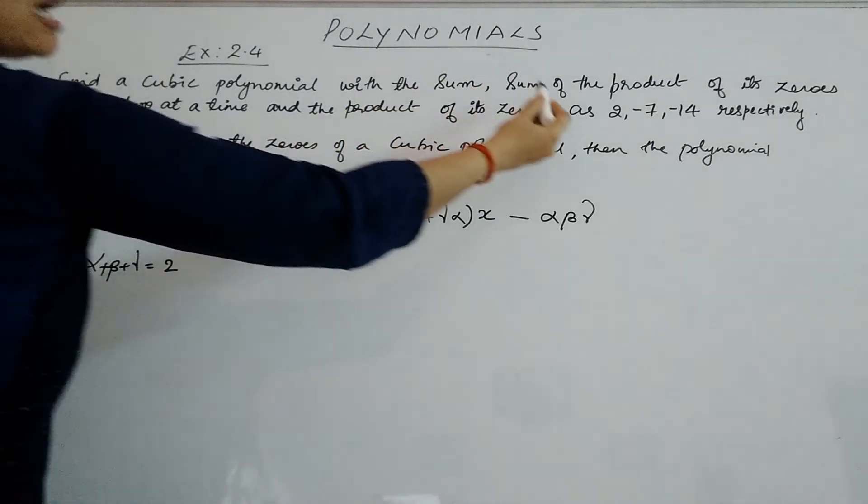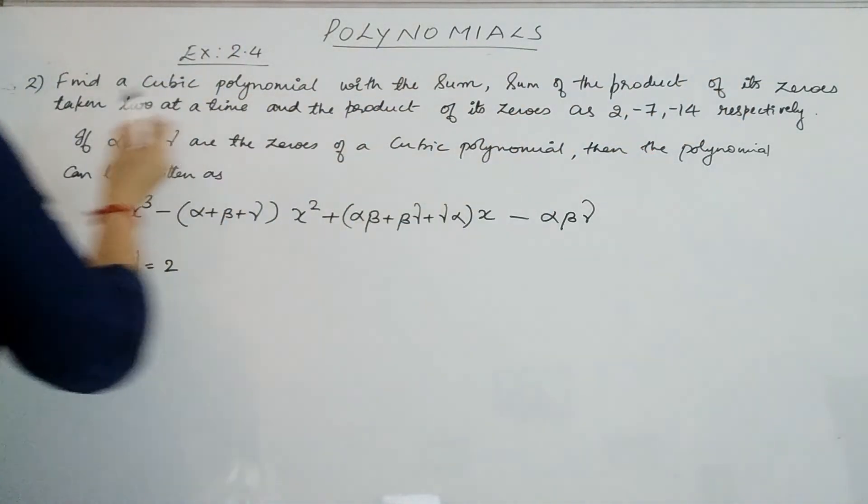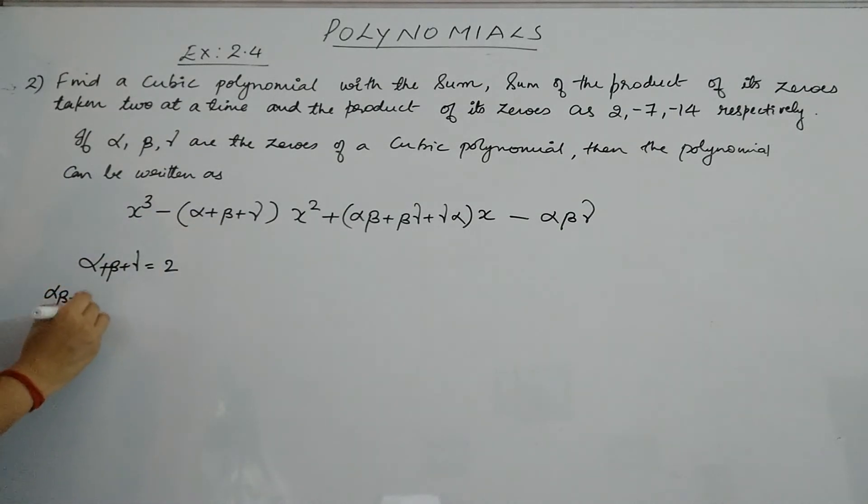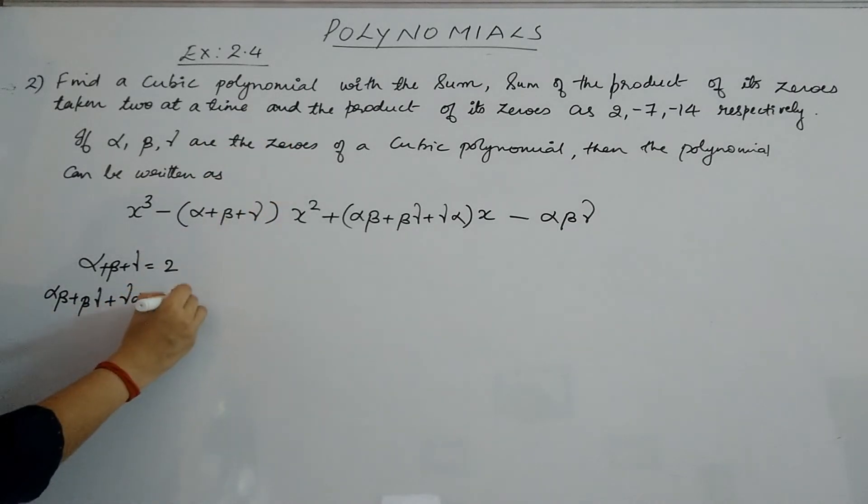Then they have given the sum of the products of its zeros taken two at a time. That means αβ + βγ + γα = -7.